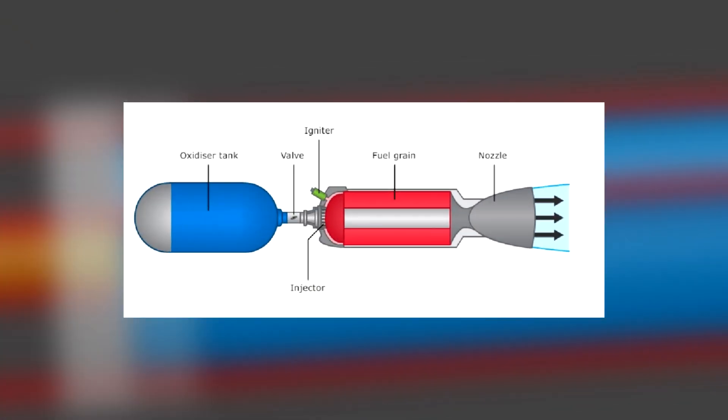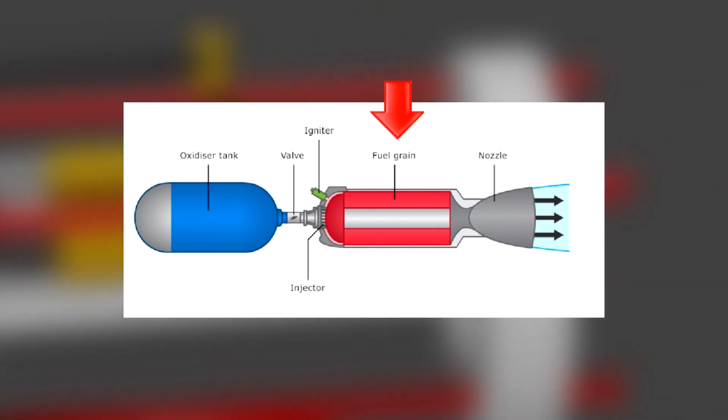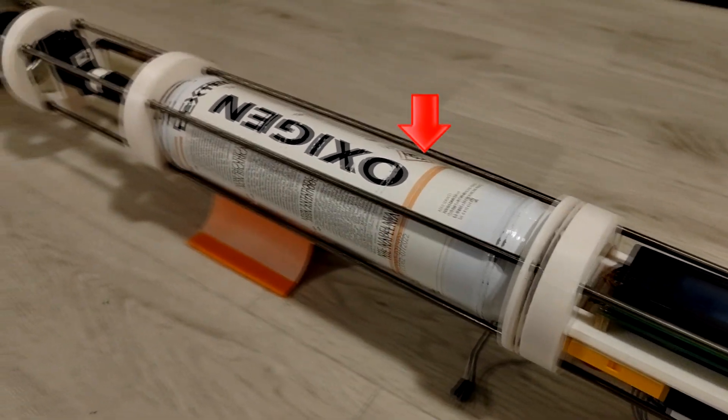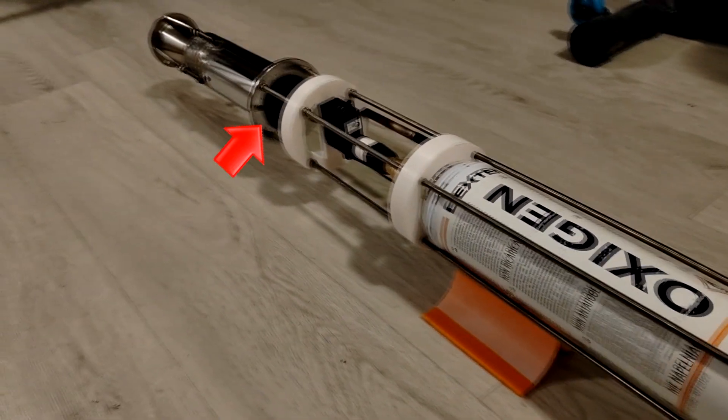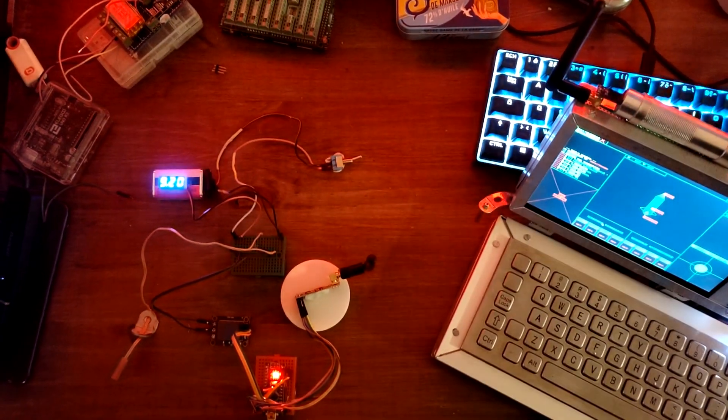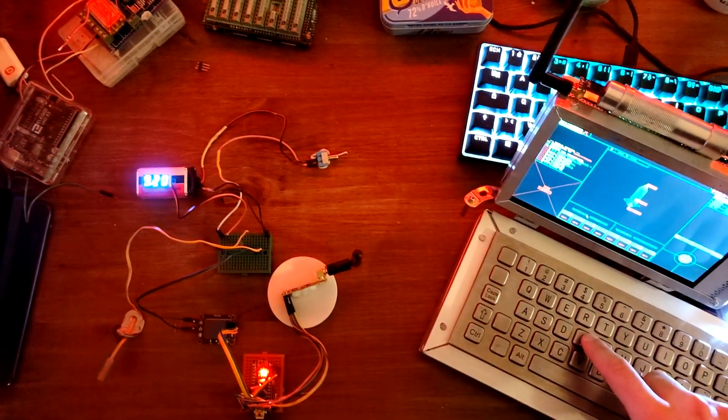The hybrid rocket engine generates this pressure by pouring liquid oxygen on a solid fuel block. You can see here the oxygen tank, the valve, and the combustion chamber.